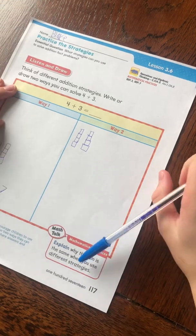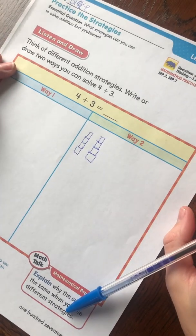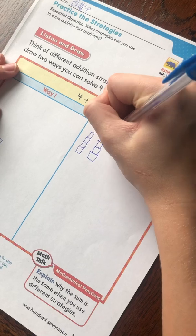Okay, 4 plus 4 is 8, but we want 4 plus 3. So what can we do? We can take away this block.